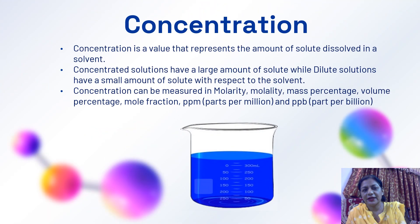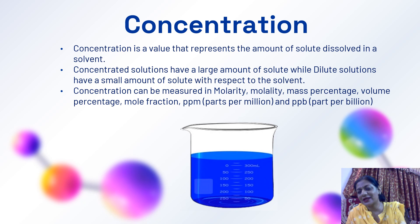Concentration is the value that represents the amount of solute dissolved in the solvent. Concentrated solutions have a large amount of solute, while dilute solutions have a small amount of solute with respect to the solvent. Concentration can be measured with all these terms: molarity, molality, mass percentage, volume percentage, mole fraction, PPM (parts per million), and PPB (parts per billion).